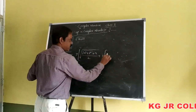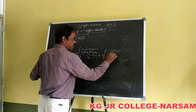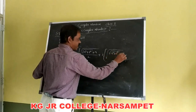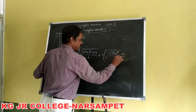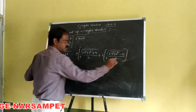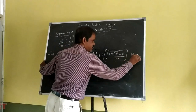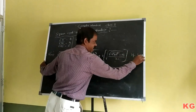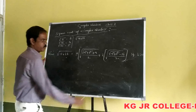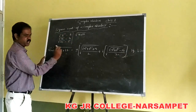Plus i times square root of (square root of A squared plus B squared, minus A) divided by 2. The condition is: if B is greater than 0, you can apply this formula.